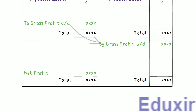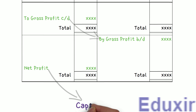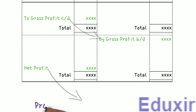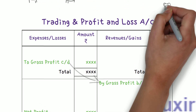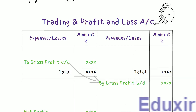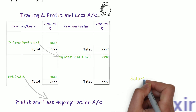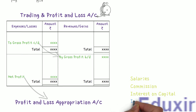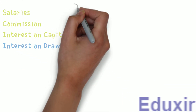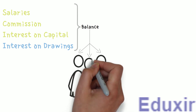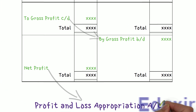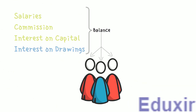In case of a sole proprietorship, the net profit is directly transferred to the capital account. However, in case of a partnership firm, the net profit should be transferred to the profit and loss appropriation account. This account is an extension of the profit and loss account and is used to make necessary adjustments for salaries, commission, interest on capital, interest on drawings, etc. After all these appropriations are made, the resulting balance is distributed among the partners.